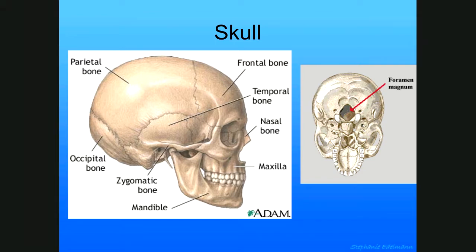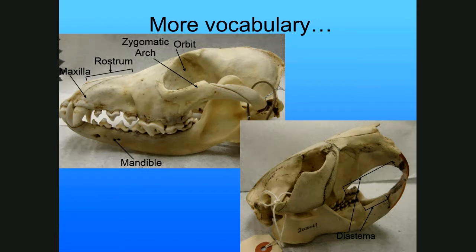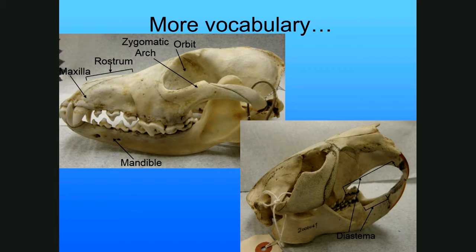The orbit is where the eyeball goes. The rostrum is basically the snout — the portion of the skull in front of the orbit. The zygomatic arch is the lateral border of the orbit and the temporal fossa — it's that arch off to the side of the skull.